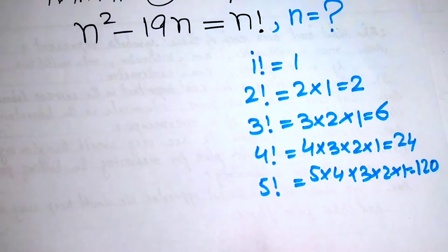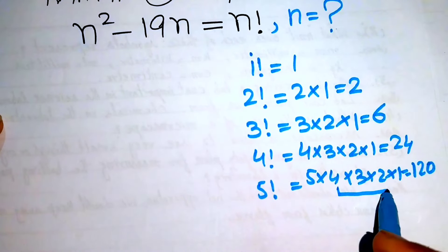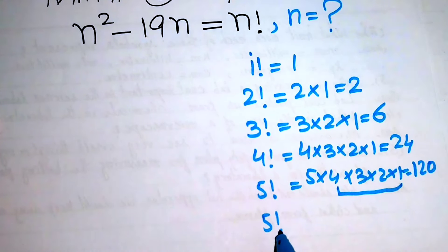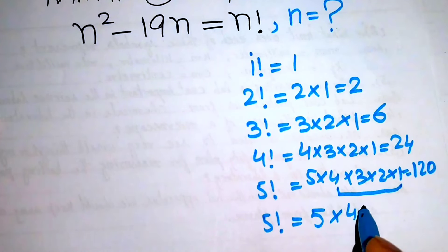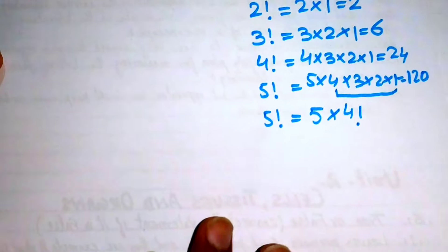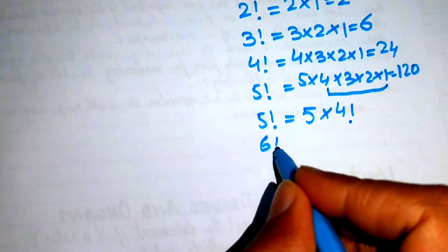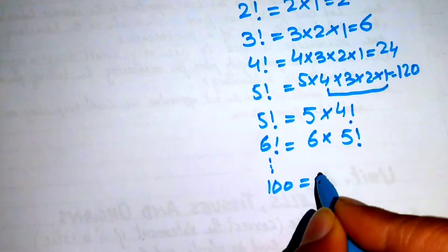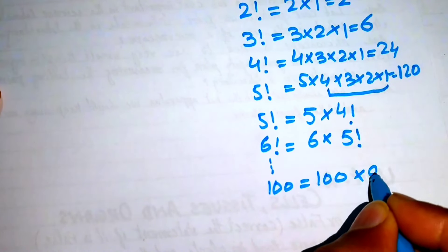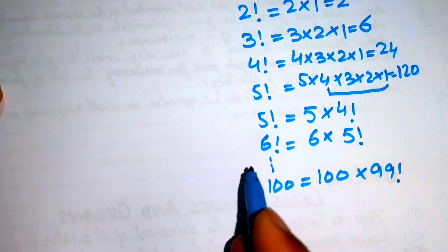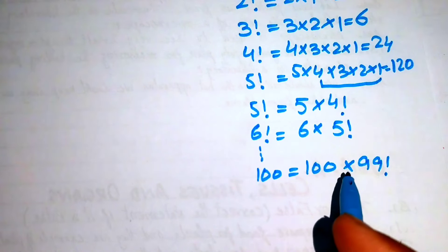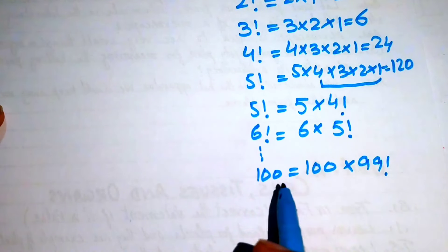We can see that 4 times 3 times 2 times 1 equals 4 factorial, so we write 5 factorial as 5 times 4 factorial. Similarly, 6 factorial equals 6 times 5 factorial, and so on. If we write 100 factorial, we write it as 100 multiplied by 99 factorial. This shows that we can convert any factorial to a product involving the factorial of one less.